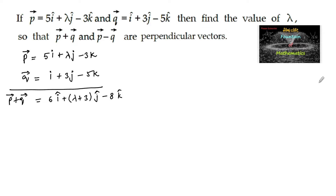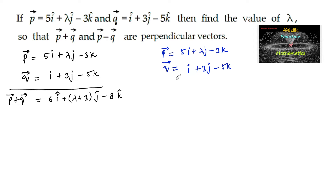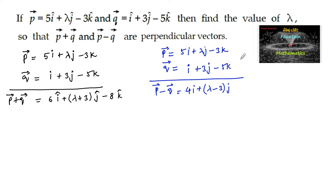So this is p plus q. For p minus q: p = 5i + λj - 3k and q = i + 3j - 5k, so p minus q vector is equal to 5 minus 1, that is 4 times i, plus λ minus 3 of j, and here minus 3 plus 5, that is plus 2k.